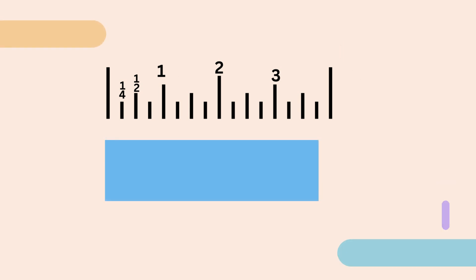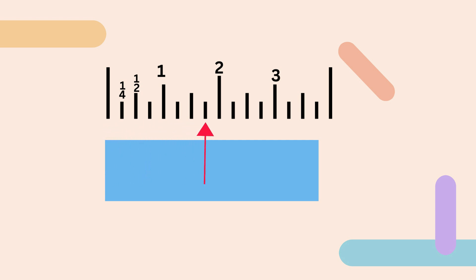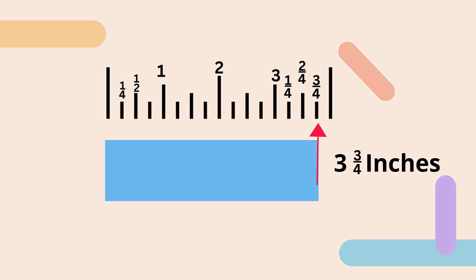I hope you're beginning to get the hang of this. With this one let's start at zero. It goes past the one, the two, and the three. Then it goes past the one-half and it's at the third one-fourth mark. So this will be three and three-fourths inches.